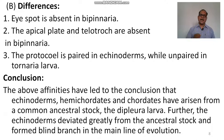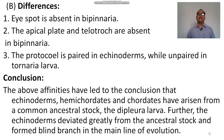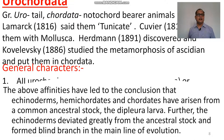Differences: eye spot is absent in the bipinnaria larva of Echinodermata. The apical plate and telotroch are absent in bipinnaria. The protocoel is paired in echinoderms while unpaired in tornaria larva. Conclusion: echinoderms, hemichordates, and chordates have arisen from a common ancestral stock and the dipleurula larva. The echinoderms deviated greatly from the ancestral stock and formed a blind branch in the main line of evolution.